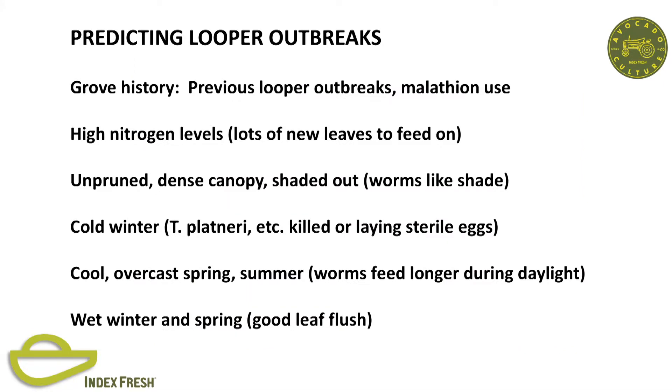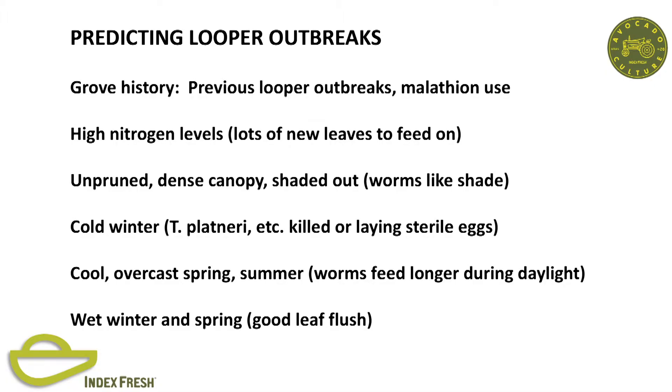How do you predict the looper outbreak? Previous history of the grove, previous malathion use. We used to have outbreaks when we used malathion to control greenhouse thrips back in the 80s in Carpinteria—you'd control greenhouse thrips, and then the field rep would call and say, I've got looper all over the place. I was called out to a field where the poop from the worms was so abundant it sounded like it was raining. High nitrogen levels contribute to looper outbreaks. Unpruned trees, dense canopies, shaded-out orchards. Cold winters can kill trichogramma platinarii or cause them to lay sterile eggs. Cool overcast springs and summers, wet winters and springs that cause good leaf flush.